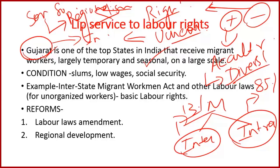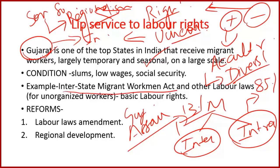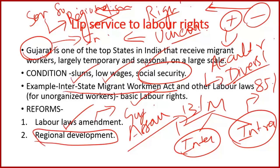Regionalism is manifested in increasing protests in states including Gujarat and Assam against labor migrants. Though Gujarat has the Interstate Migrant Workmen Act promising health, education, and basic pay rights, none of its provisions are practically followed due to policy paralysis. Migrant laborers are forced to live in slums with low wages and without social security. Valid labor laws must be amended, and regional development is essential to curtail migration and promote inclusive development.